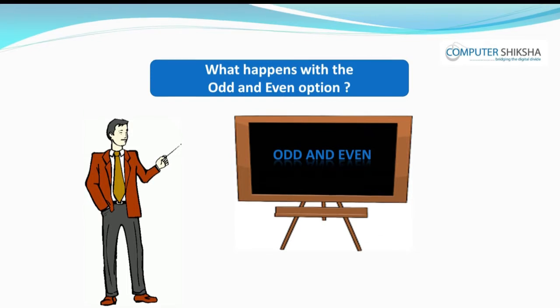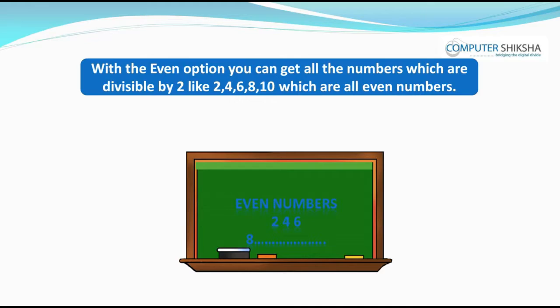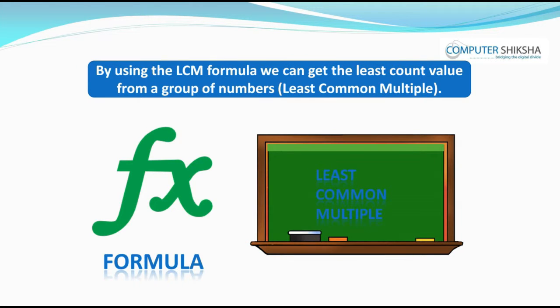What happens with the odd and even option? With the odd option, you can get numbers which are not divisible by 2, like 1, 3, 5, 7, 9 — these are all odd numbers. With the even option, you can get all numbers which are divisible by 2, like 2, 4, 6, 8, 10 — which are all even numbers.